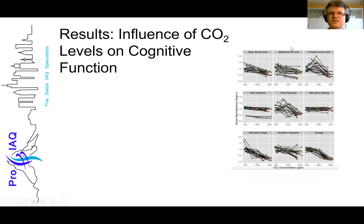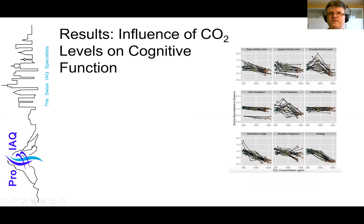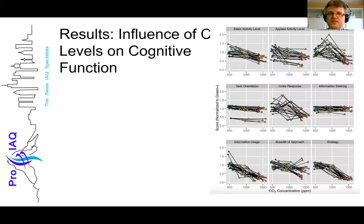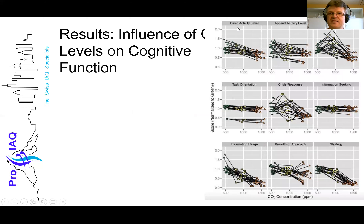Looking at the influence of CO2 on cognitive function: the x-axis is CO2 content, the y-axis is the function score. Basic activity level drops a little with higher CO2. For task orientation, there's very little difference with higher CO2. For crisis response, it's quite interesting that some people at 1000 ppm of CO2 actually work better than at 500 ppm. For information seeking, there's not much happening.